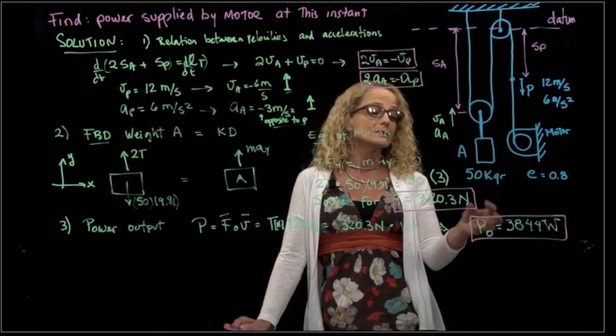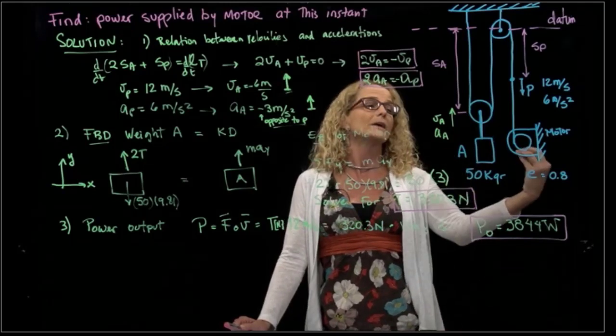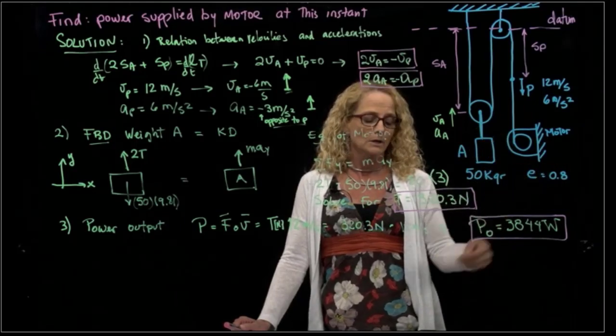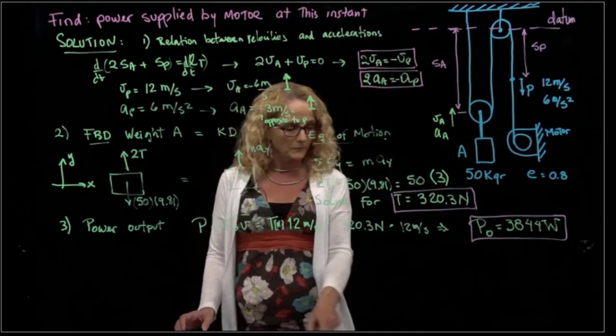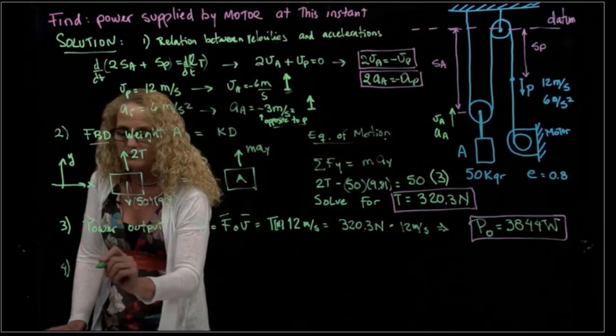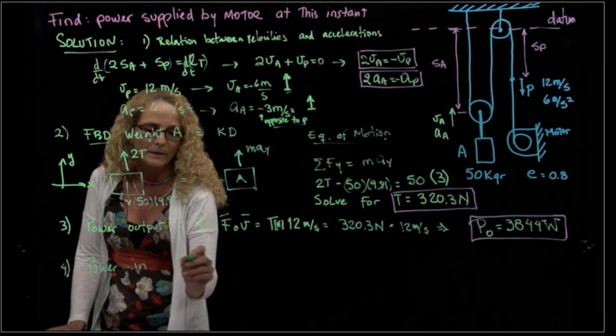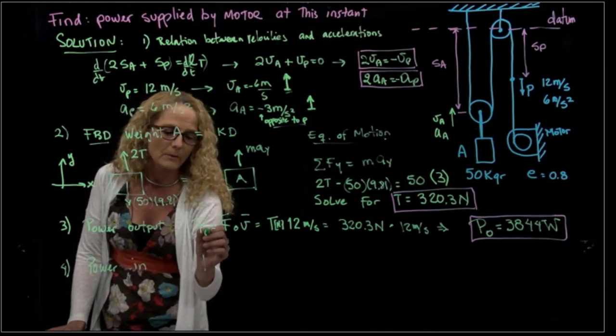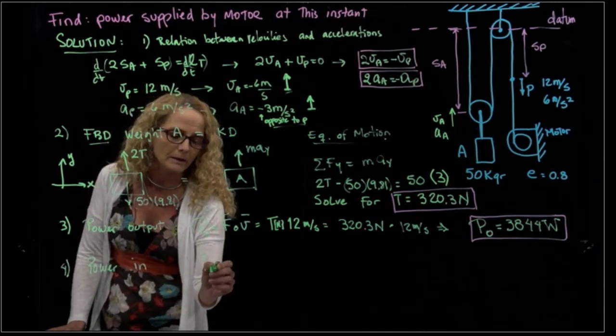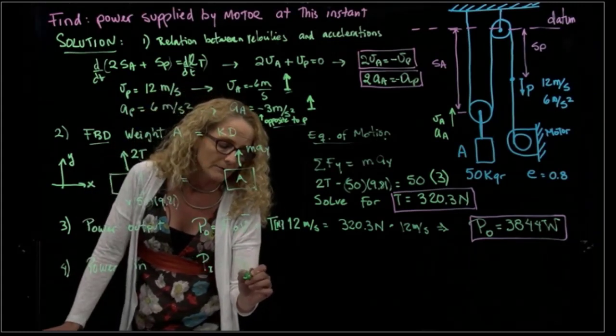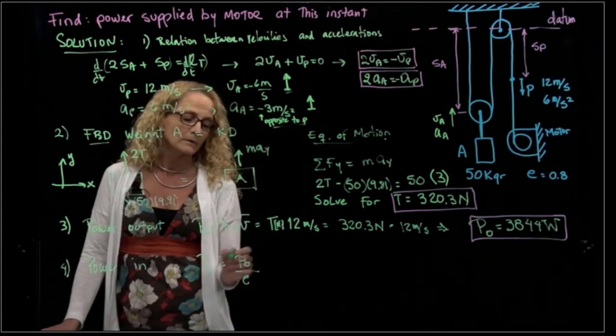So that's the power that the motor has to give to do the work of pulling up that weight. However, that's not the power we have to give to the motor in order to work because we have an efficiency. So it's very important that the fourth step of this problem is to calculate the power in. Let's name that power out, and power in will be that power out divided by the efficiency.